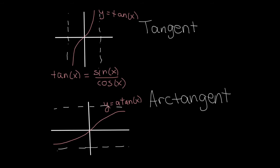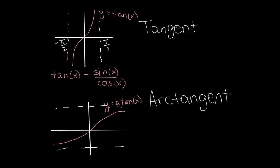There are two more graphs to remember: the tangent graph and the arctangent graph — these are inverses of each other. The tangent graph has asymptotes at x equals pi over two and x equals negative pi over two because tangent equals sine over cosine, and anywhere the cosine function equals zero makes the denominator zero, creating an asymptote. The tangent graph keeps repeating, with another asymptote at x equals three pi over two.